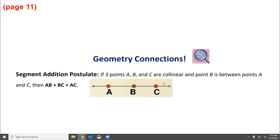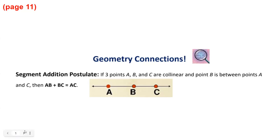The Segment Addition Postulate says that if three points A, B, and C are collinear and B is between A and C, then you can just add them up: the length of segment AB plus the length of segment BC equals AC, the length of the entire segment. So literally, if you've got a segment that you split into two parts, you can add those two parts together to get the whole — that is the concept we're working with today.